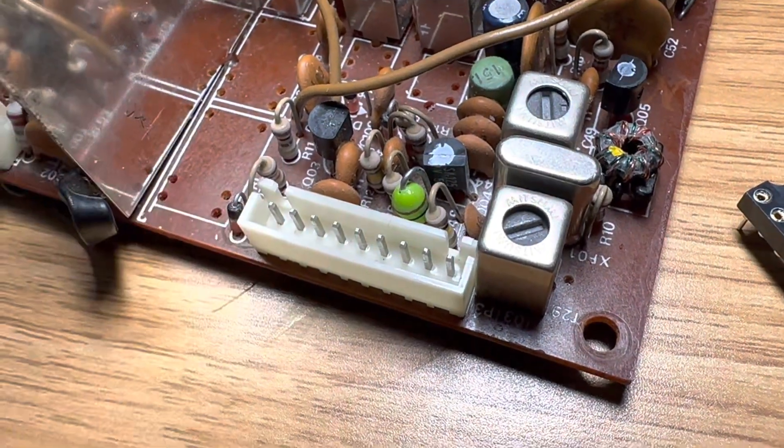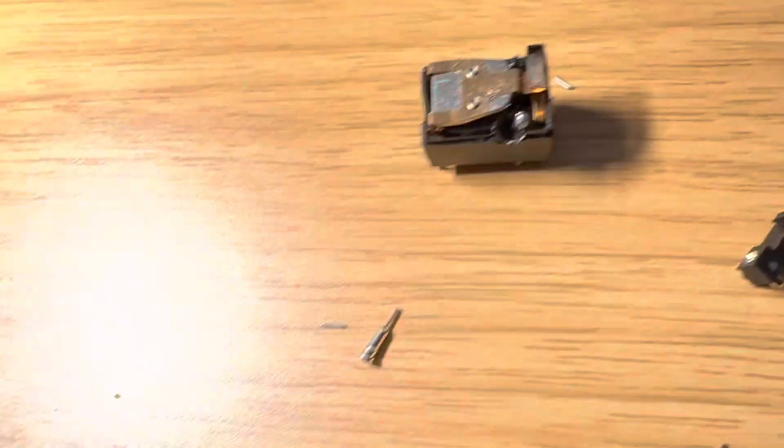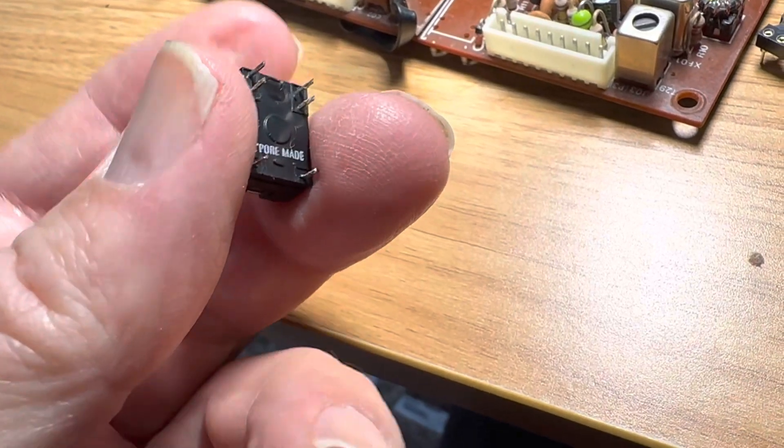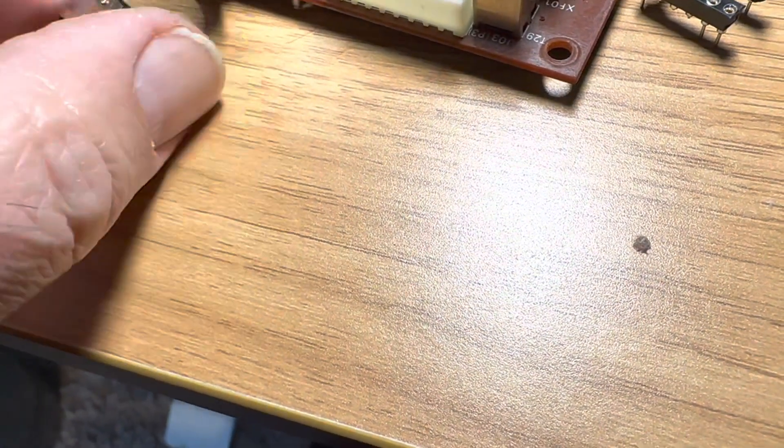Anyway, so these came out without much of a headache. Those two relays were pretty much in there, and they popped right out with a desoldering tool, which is just a pump tool, vacuum tool, so those came out pretty easily.